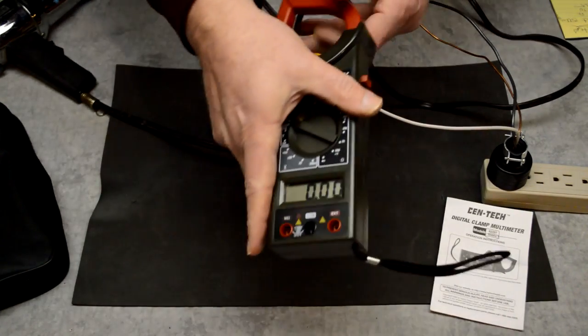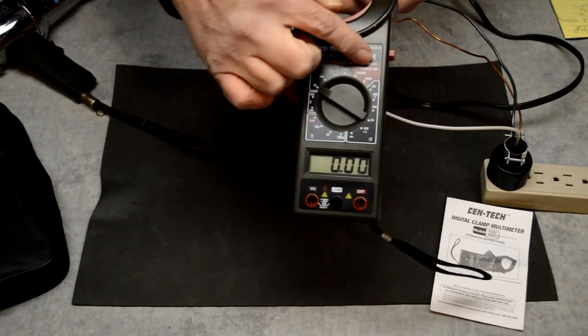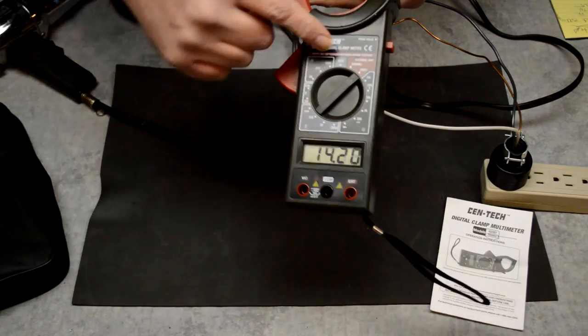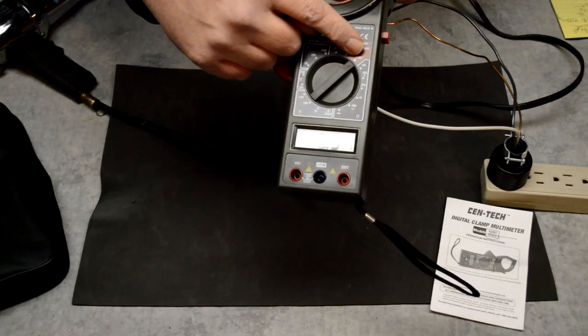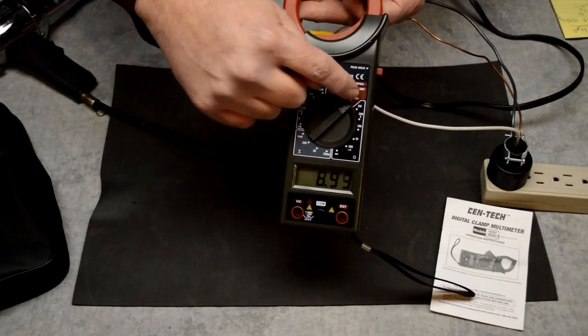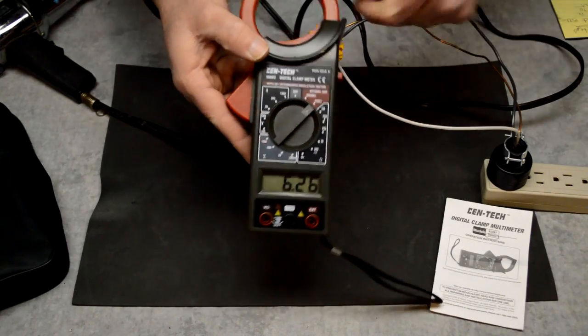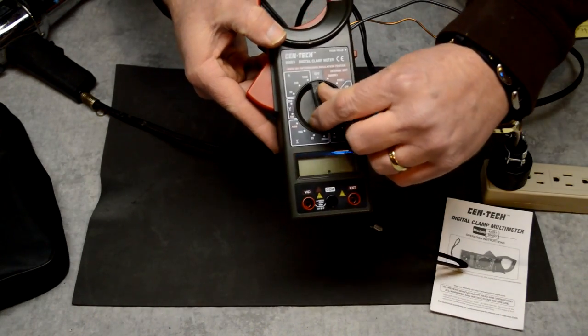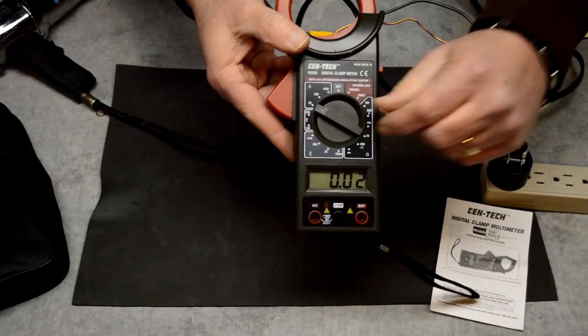Now on this meter, you'll notice that there is an actual setting over here in this red to use the external tester. And I will tell you that this does not work with this method. You must use the amperage settings over here. I'm going to set mine on 20 amps here.